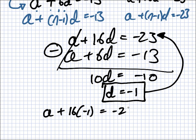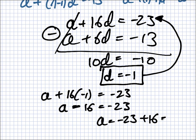So, it would be A plus 16 times minus 1 equals minus 23. So, you get A minus 16 equals minus 23. So, A equals minus 23 plus 16. Minus 7. Minus 7, yes.